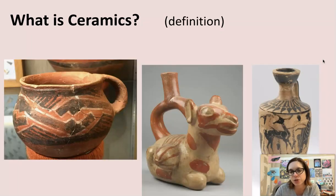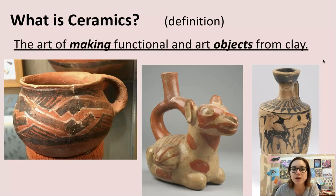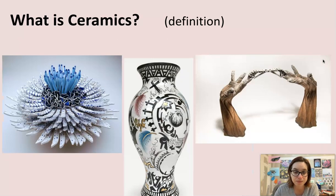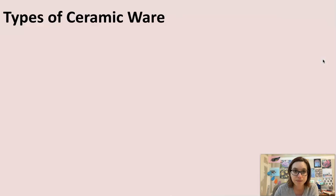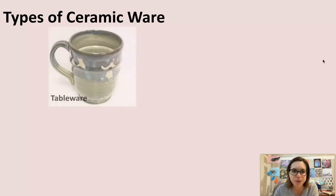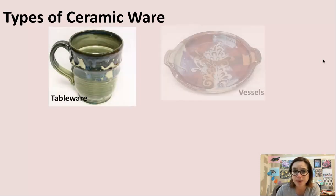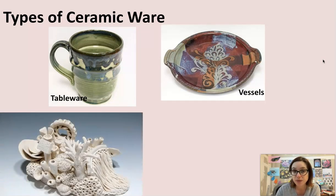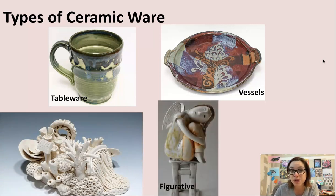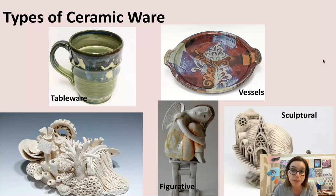So what is ceramics? This is our general definition: it's the art of making functional and art objects from clay. There are different types of ceramic ware that you're familiar with. We have tableware such as mugs and cups, and vessels such as platters and bowls. We have decorative ceramic ware — things that just look nice. There's figurative sculpture, and also sculptural ceramic ware, which are our fine art objects.